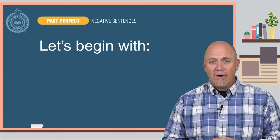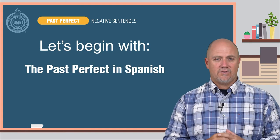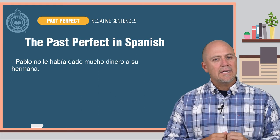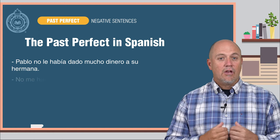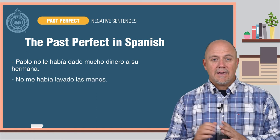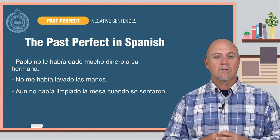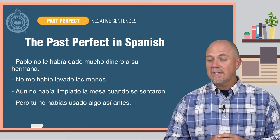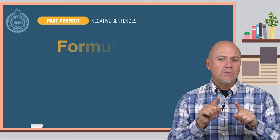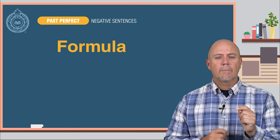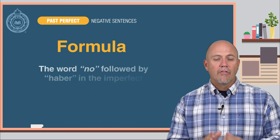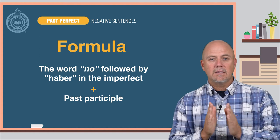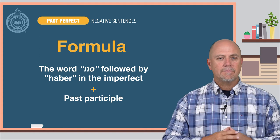Let's begin with what you already know: the past perfect tense in Spanish. Here are some examples. Pablo no le había dado mucho dinero a su hermana. No me había lavado las manos. Aún no había limpiado la mesa cuando se sentaron. Pero tú no habías usado algo así antes. As you can see, in Spanish, the past perfect is formed by the word no, followed by the Spanish auxiliary verb haber in the imperfect, plus the past participle.